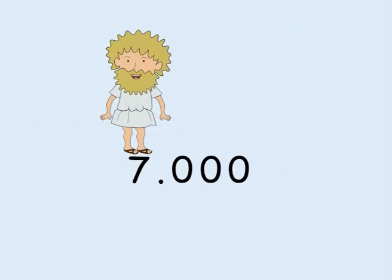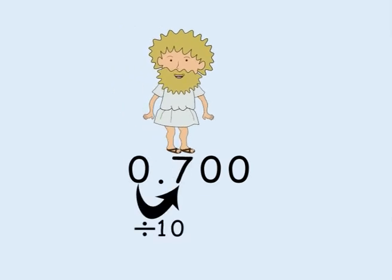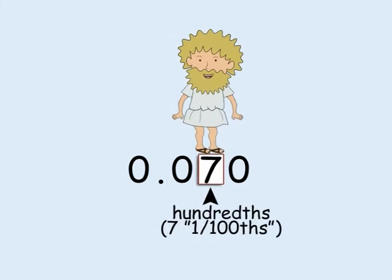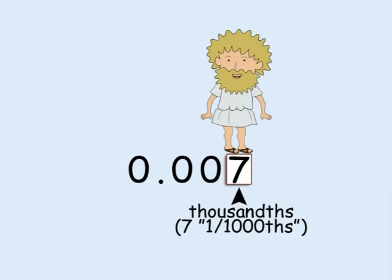Just as moving a place to the left increases size by a factor of ten, moving to the right makes it ten times smaller. The position immediately to the right of the decimal point tells you how many tenths of one there are in a number. The position two places to the right tells you how many hundredths there are. The position three places to the right tells you how many thousandths there are. And so on.